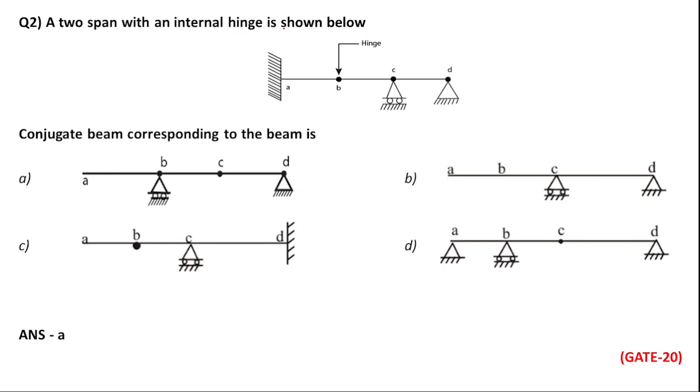Next question. A two span with an internal hinge is shown below. There are two spans and you have an internal hinge. Conjugate beam corresponding to the beam is? So this question, what can be your fixed beam? This is where you can be fixed. This will be free.